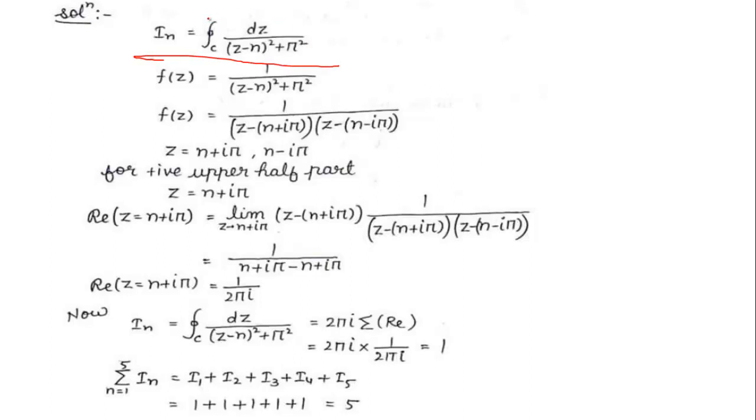We are given the value of I_n. We solve this: f(z) is the given function 1/[(z-n)² + π²]. We can also write this as 1/[(z-n+iπ)(z-n-iπ)]. So z has two solutions: n+iπ and n-iπ.